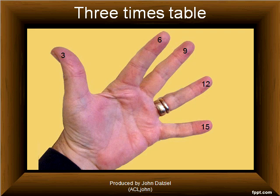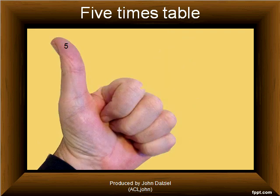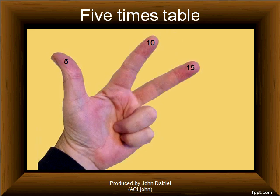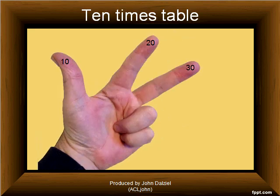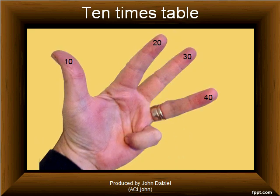And for the 5 times table, even easier: 5, 10, 15, 20, 25. And I suppose some people would argue that the 10 times table is even easier: 10, 20, 30, 40, 50.